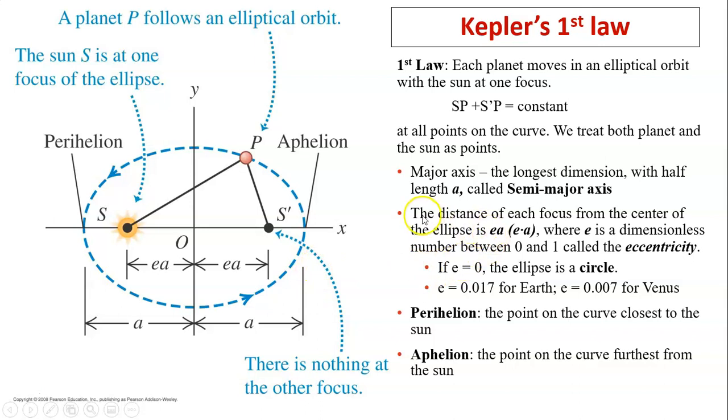There's two things we need to know. Major axis is the longest dimension and the semi-major axis is just half of that. The semi-major axis is important because this is the quantity we need for calculation. The other thing is the distance of each focus from the center of the ellipse. This part is called EA, where E times A, this E is eccentricity.